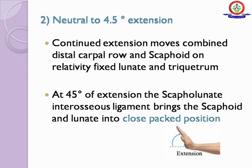From neutral to 45 degrees extension: continued extension moves the combined distal carpal row and scaphoid on the relatively fixed radius, lunate, and triquetrum. At 45 degrees extension, the scapholunate interosseous ligament brings the scaphoid and lunate into a closed pack position.